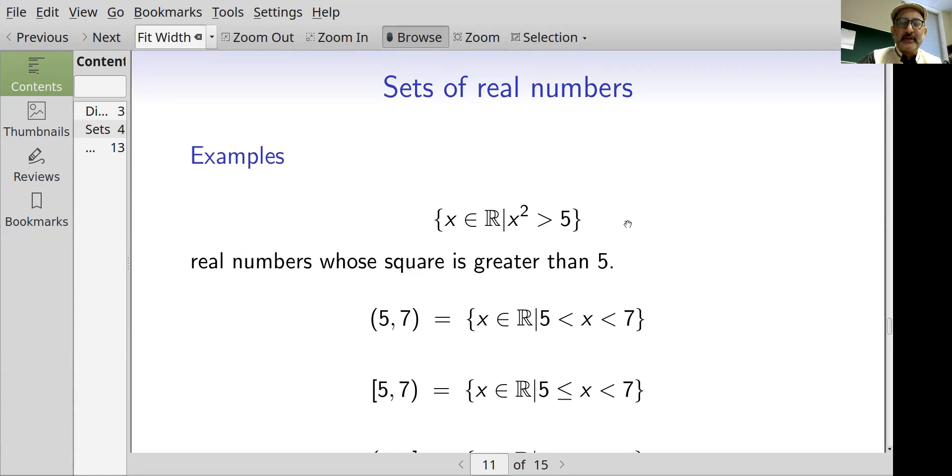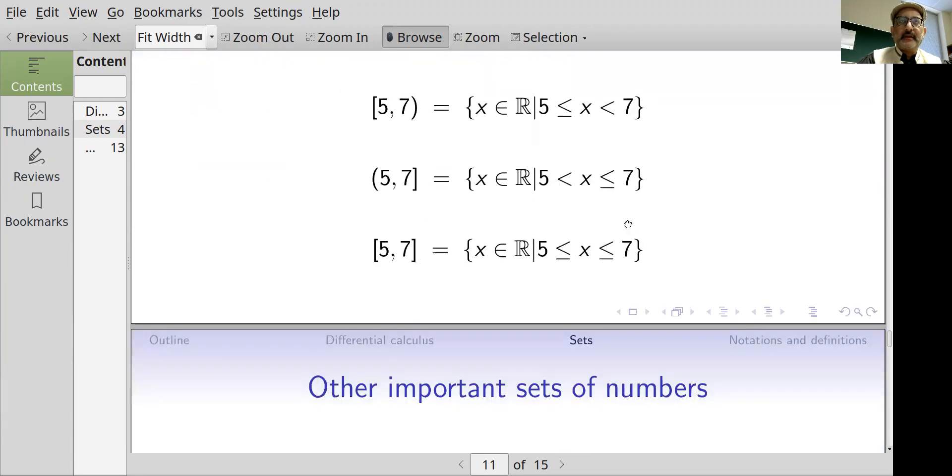The notation (5, 7) using round brackets means the interval on the real number line such that x lies between 5 and 7, all the real numbers between 5 and 7 not including 5 and not including 7. If I write [5, 7) with a square bracket next to the 5 and a round bracket next to the 7, that means the real numbers between 5 and 7 and this time we include 5 and we do not include 7. Round brackets mean we are not including this number and square brackets mean we are including this number.